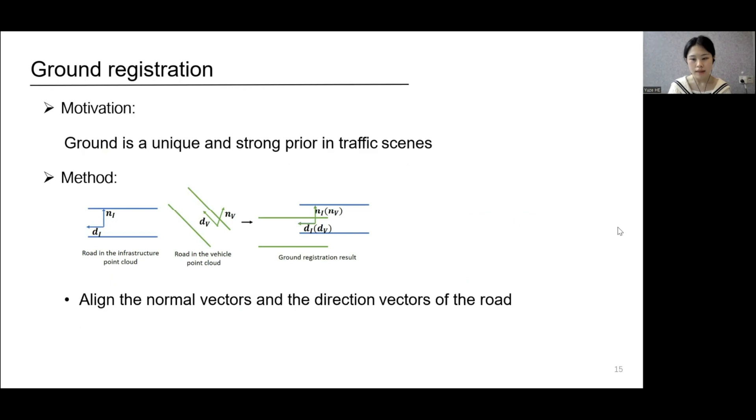By aligning the two vectors, we can get a rotation matrix Rg, which serves as a registration prior and will be used to speed up the registration module.